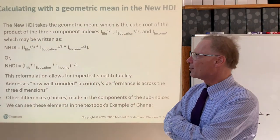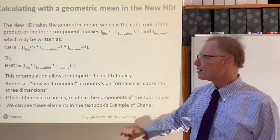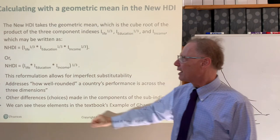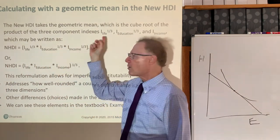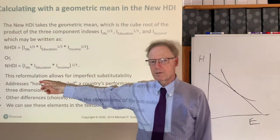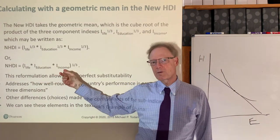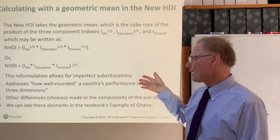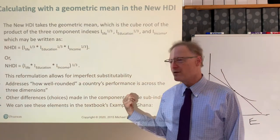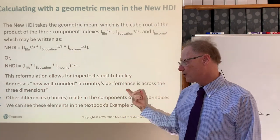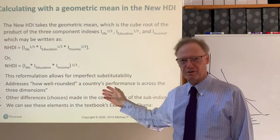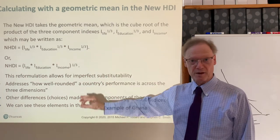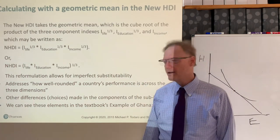So the Human Development Index takes the indices for life expectancy, education, and income — each ranging from zero to one — raises each of them to the power one-third, and then multiplies them together. Equivalently, you multiply the three index numbers together and then take the cube root. The result is again an index that goes between zero and one. This allows for imperfect substitutability — it takes account of how well-rounded an economy and society is with respect to its achievements in health, education, and income.